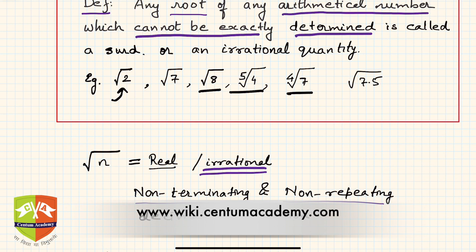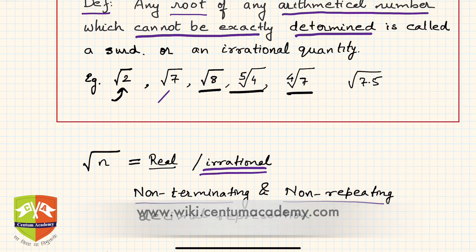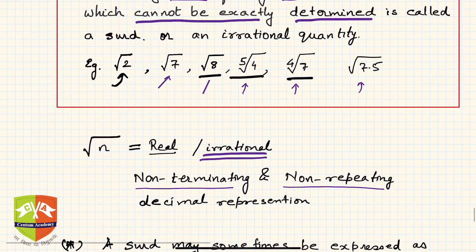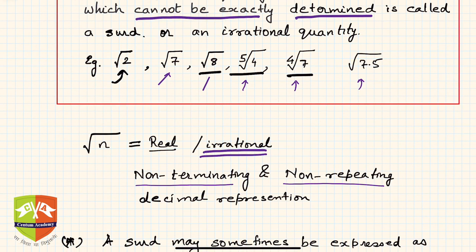All such roots of any number which cannot be exactly determined are called surds. Examples include root of 7, root of 8, fifth root of 4, fourth root of 7, and root of 7.5 — all these are examples of surds. You can also have surds like root of x or root of y. These are also considered to be surds because you don't know the value of x and y.